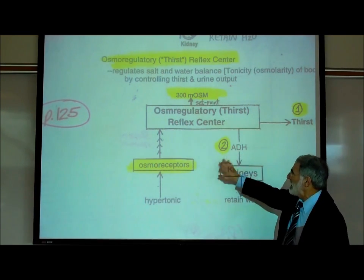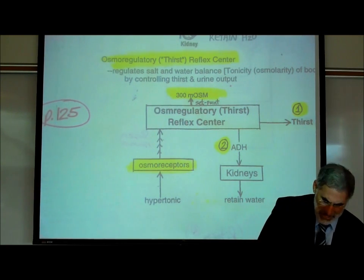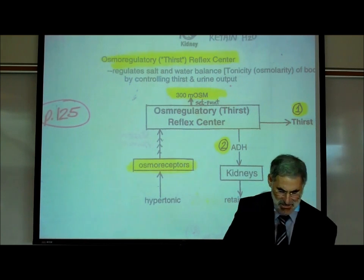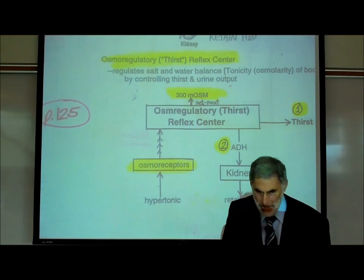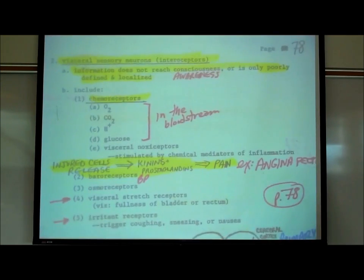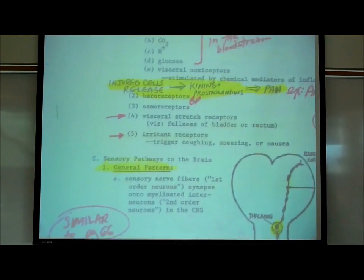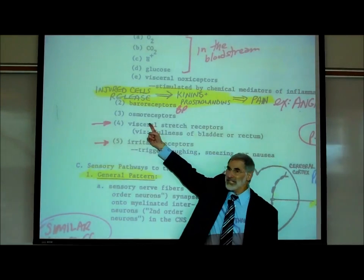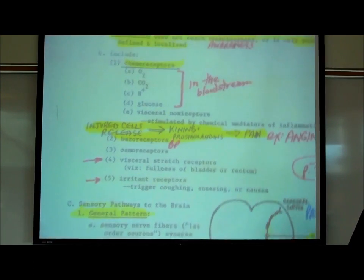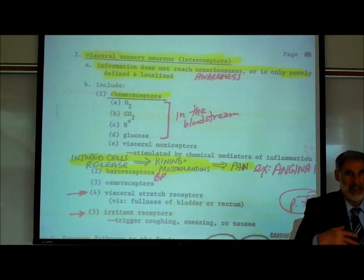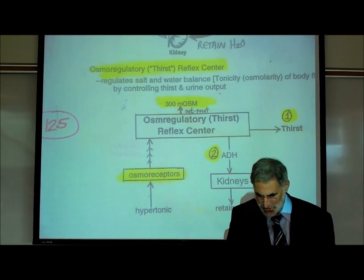Have we ever mentioned osmoreceptors previously? Yes — on page 78 we were learning about visceral sensory neurons or interoceptors, and among them were osmoreceptors. Those are sensory neurons that monitor the tonicity of our body fluids. That information doesn't reach consciousness — they are visceral sensory neurons — but that's where we first mentioned them.